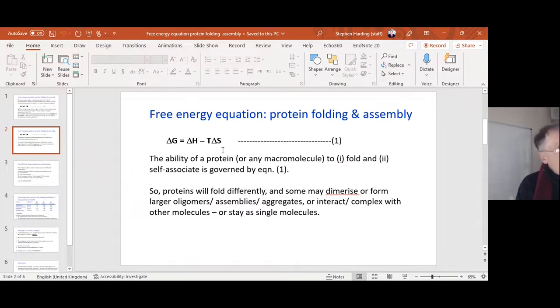Beta-lactoglobulin forms dimers in the normal state because the free energy equation, the delta G or the G, is a minimum when beta-lactoglobulin has formed these dimers. Hemoglobin under normal situations forms tetramers, non-covalent linked tetramers, because delta G is a minimum.